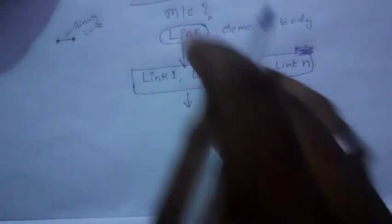You cannot form a machine using a single link. So I am taking a number of links — link number two, link number three, and so on up to link number n. To build a machine, I am taking n number of links. I will also introduce a binary link — I will define what a binary link is later. Here I am taking four binary links: link number one, two, three, and four.